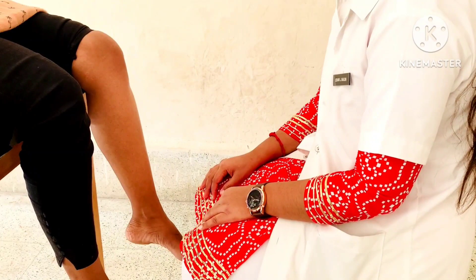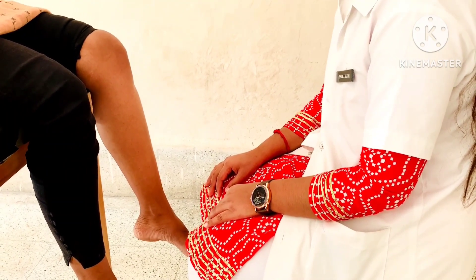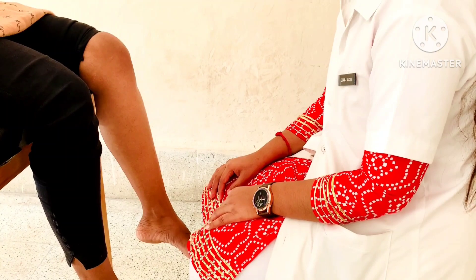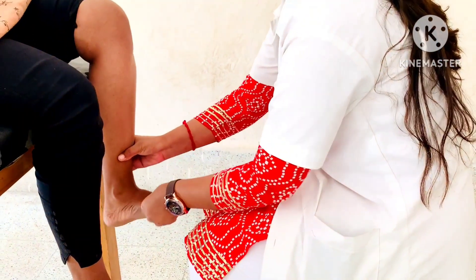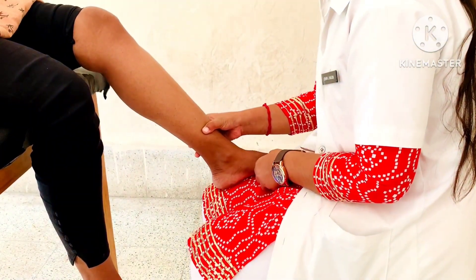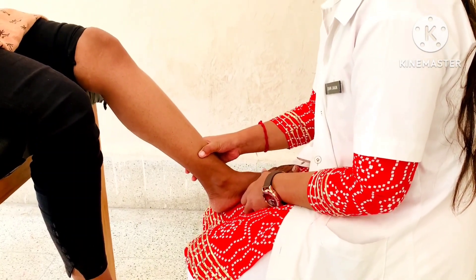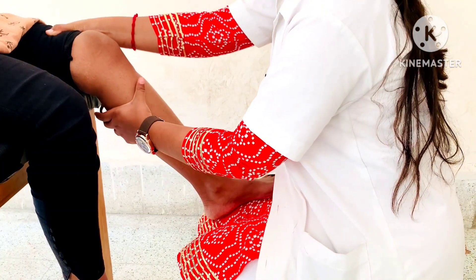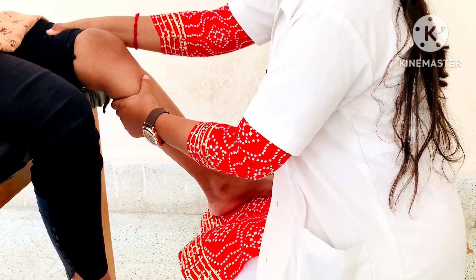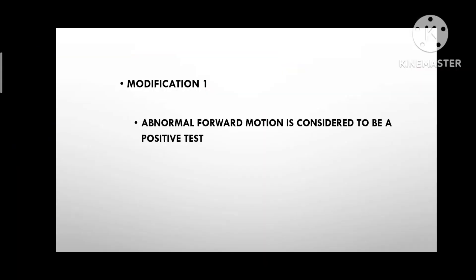Modification 1: Patient Position: sitting with the leg over the edge of the examining table. Therapist Position: sitting facing the patient, supporting the foot of the tested leg on the examiner's thigh so that the patient's knee is flexed 30 degrees. The examiner stabilizes the thigh with one hand and pulls the tibia forward with the other hand. Abnormal forward motion is considered a positive test.